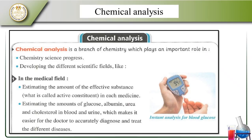Chemical analysis is part of the medical field, here estimating the amount of effective substances in medicine — in the blood or parts of diseases in the urine. When we use chemical analysis, it becomes easier for the doctor to be accurate in diagnosis and treatment of different diseases.